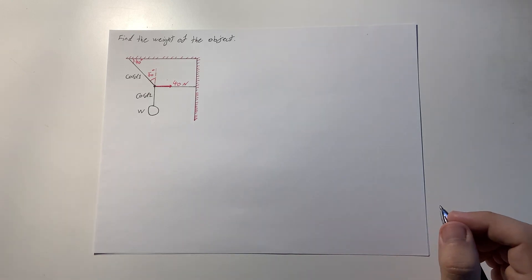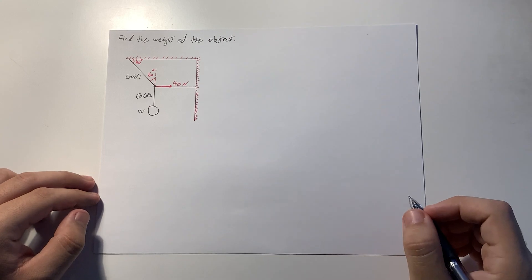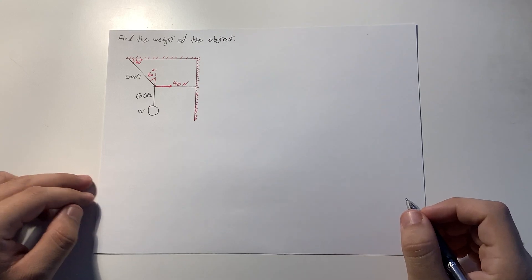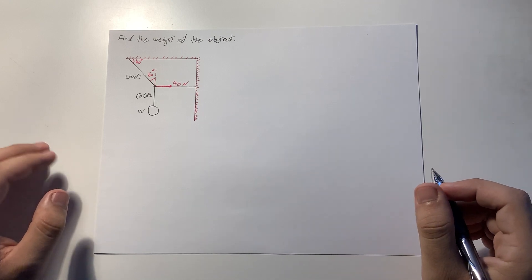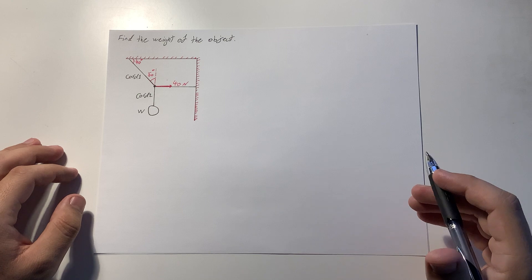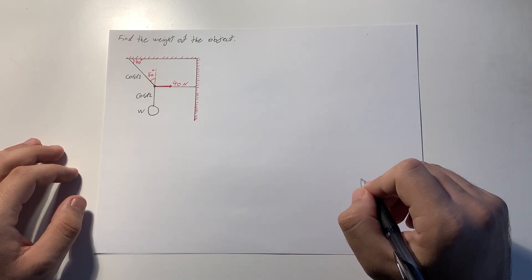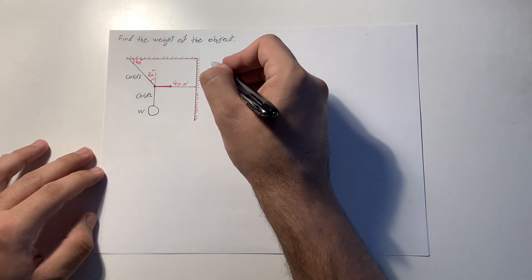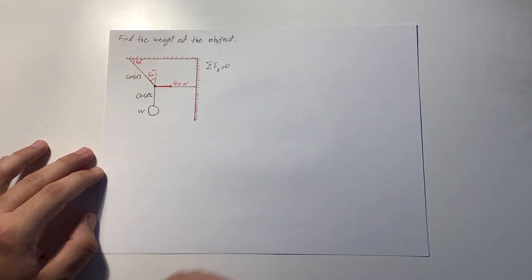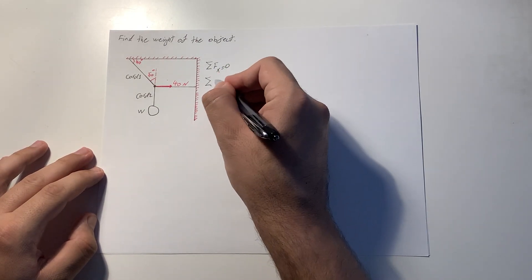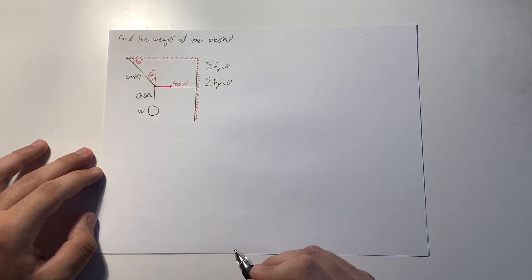We are asked to find the weight of this object, assuming the system is in equilibrium. When an object is in equilibrium, the net force acting on it is equal to zero. That means all forces in the x-direction equal zero, and all forces in the y-direction equal zero as well.